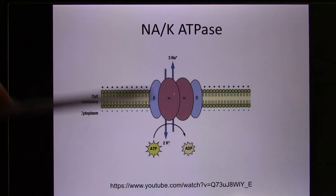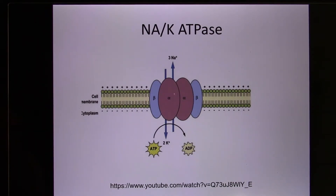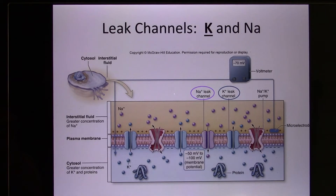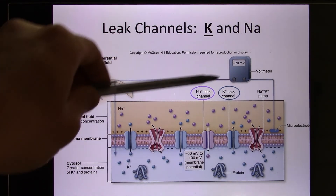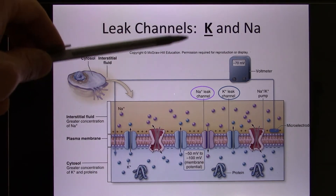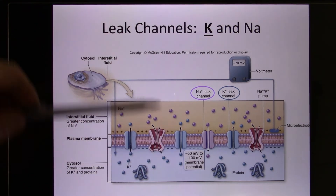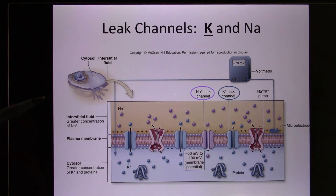You might ask: does it overdo it and make the inside minus 700 millivolt and kill the cell? The answer is no, because we have leak channels — the leak potassium channel and the leak sodium channel. The sodium-potassium pump keeps pumping potassium in, but once there's too much potassium inside, some leaks out through the potassium leak channel. That's the main one to balance the voltage. And if there's too much sodium outside, sodium leaks in through the sodium leak channel.